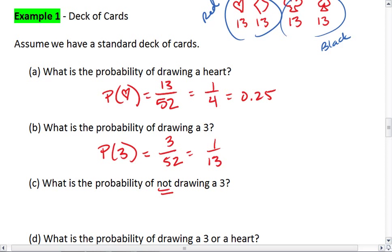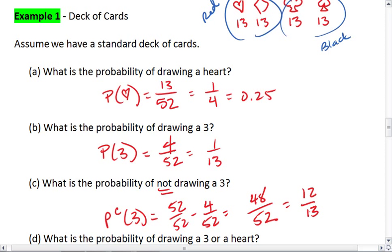The probability of not drawing a 3 is going to be the complement to drawing a 3. You can either realize that this is an entire deck minus the number of 3s in the deck. Or you can just do that math in your head and realize we have 48 cards in our deck that are not 3s, which reduces to 12/13.